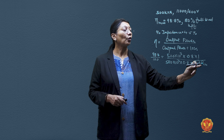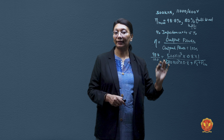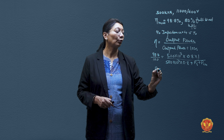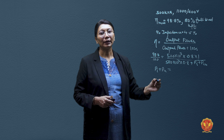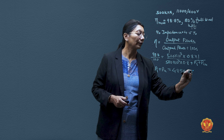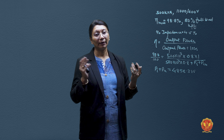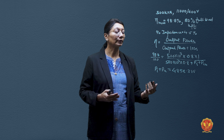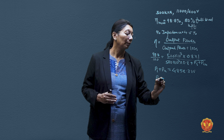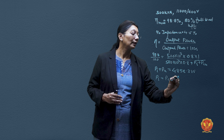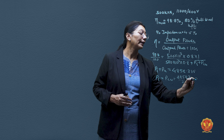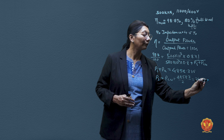At maximum efficiency, the copper losses include a factor of 0.8 (since x = 0.8 at 80% load). Solving, we get total losses of 4858.3 watts. At maximum efficiency, iron loss equals copper loss, so Pi = Pcopper = 4858.3 / 2 = 2429.15 watts.